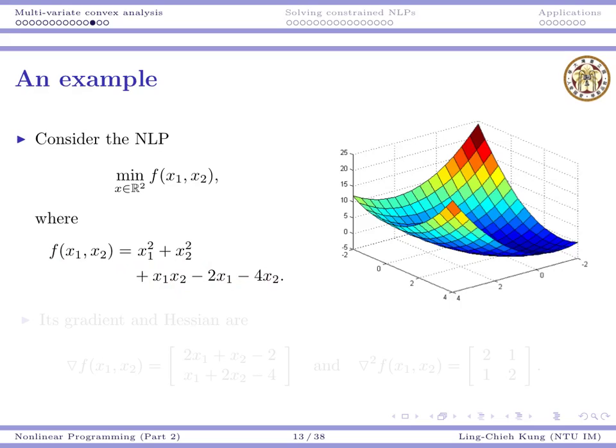By drawing a figure, we can see that this function is indeed convex. If we look at it carefully, the optimal solution is at around (1, 0) or (2, 0), somewhere in that region. So we expect to first show f is convex and then find its global minimum using the gradient vector.